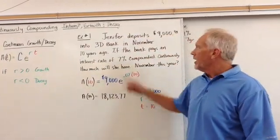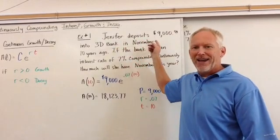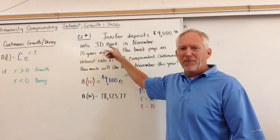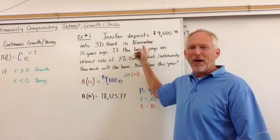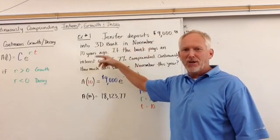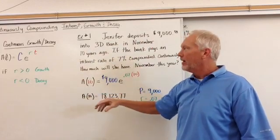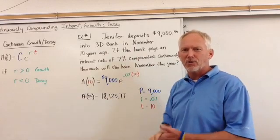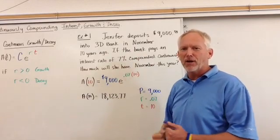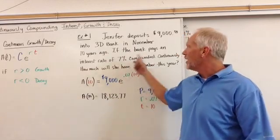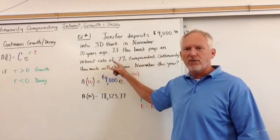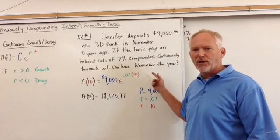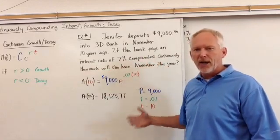Example number one: If Jennifer deposits $9,000 into 3D Bank in November, so she did it a while ago, 10 years ago she deposited some money. Maybe she went off to school, got a degree in something, so she's now ready to cash that money in. If the bank pays an interest rate of 7% compounded continuously, how much will she have in November this year, 10 years later?